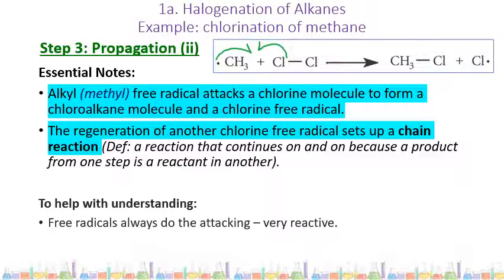Step three is propagation part two. The methyl free radical attacks another chlorine molecule to form a chloroalkane molecule and a chlorine free radical. We now have a methane molecule with a chlorine atom on it — the chlorination of methane has happened. By producing another free radical in propagation part two, we set up a chain reaction: propagation part one happens again, which causes propagation part two to happen again, and so on.